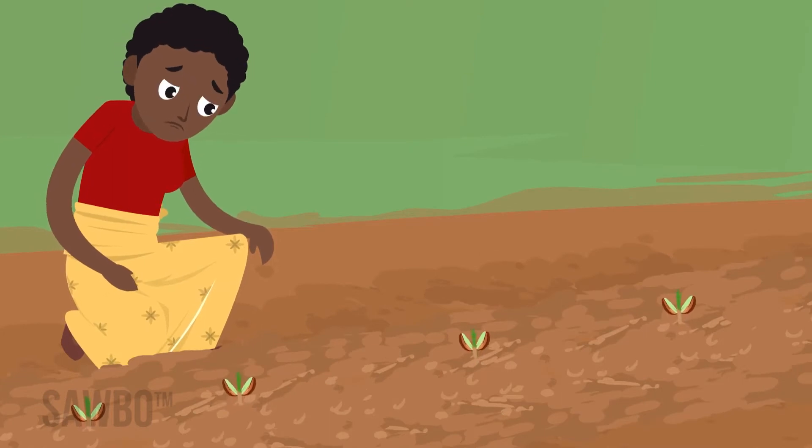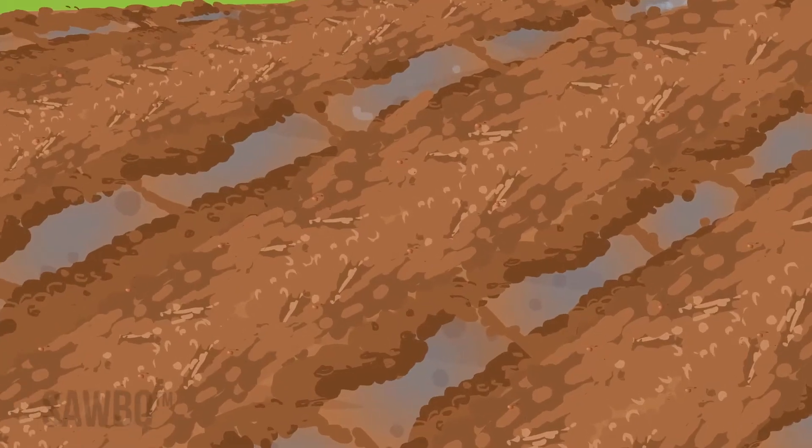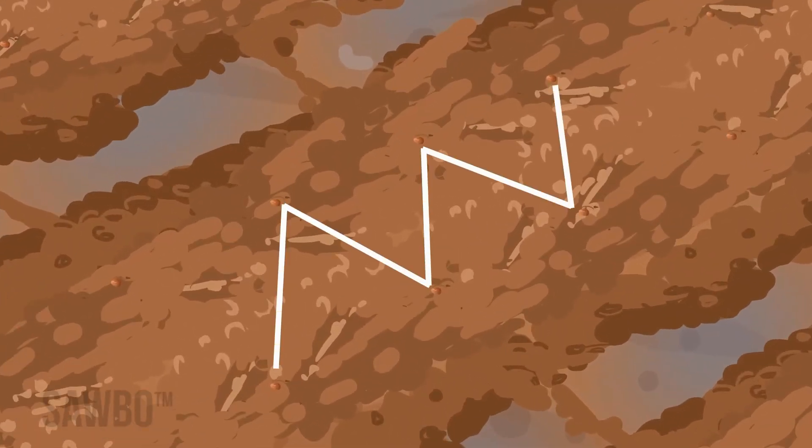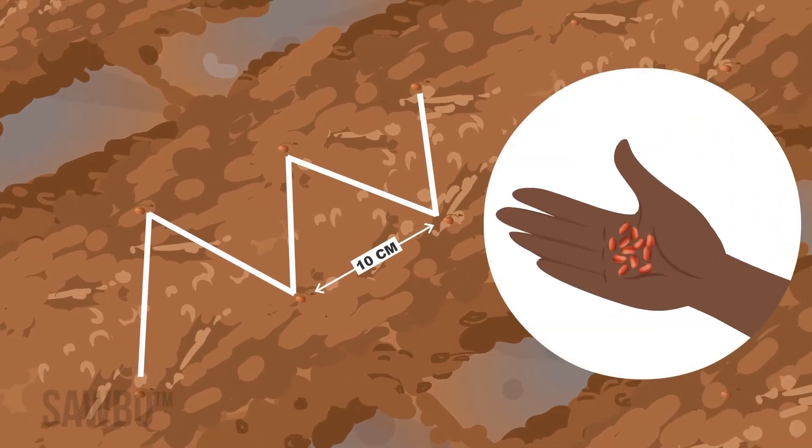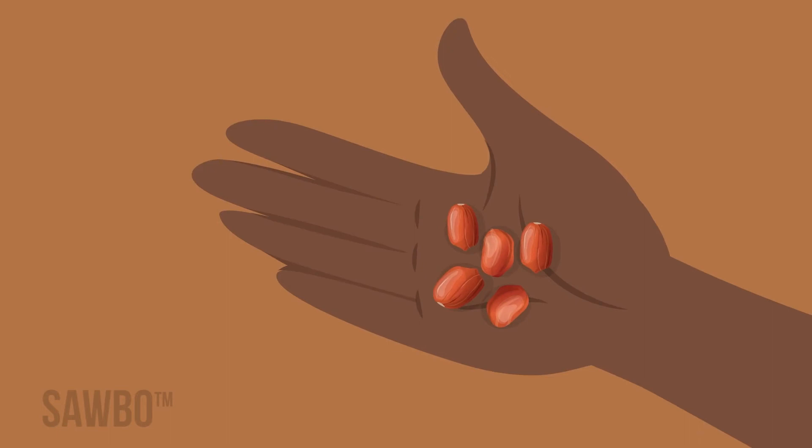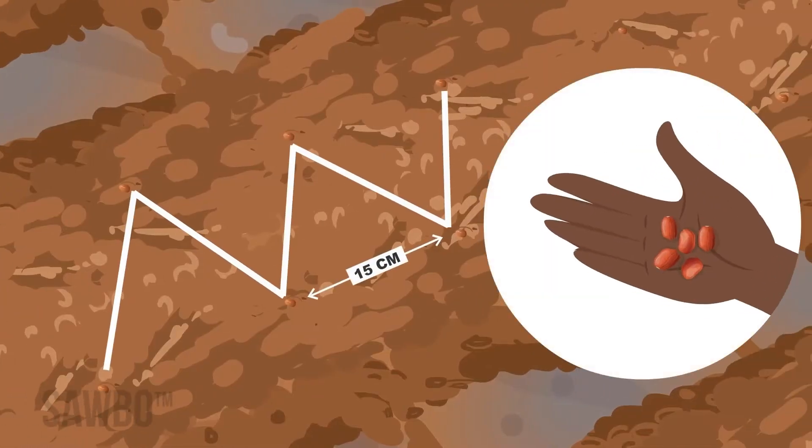Do not plant your groundnut seed too far apart. Plant using a zigzag pattern on top of the ridge. If you're planting small seeded groundnut varieties, plant a single seed every 10 centimeters. If you're planting large seeded groundnut varieties, plant a single seed every 15 centimeters.